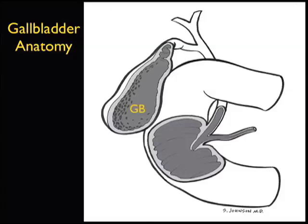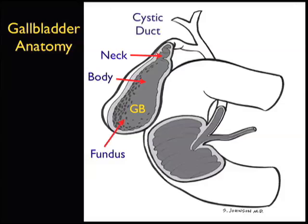Here's an illustration reviewing the anatomy of the gallbladder and biliary tracts important to bedside sonography. We see the gallbladder shaped as a pear-like structure with the upper fundus, the intermediate body, and the neck of the gallbladder towards the top of the image. Recall that impacted stones at the neck of the gallbladder often cause symptomatic biliary colic and can lead to acute cholecystitis.